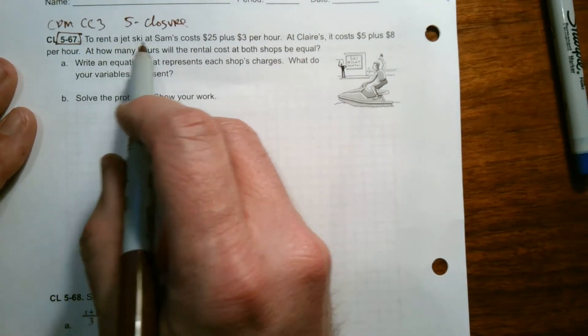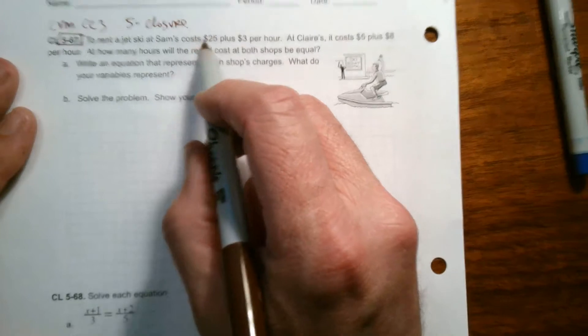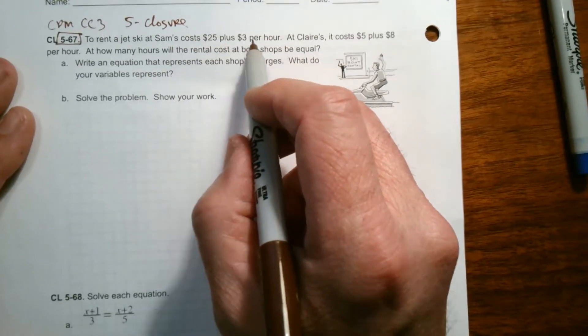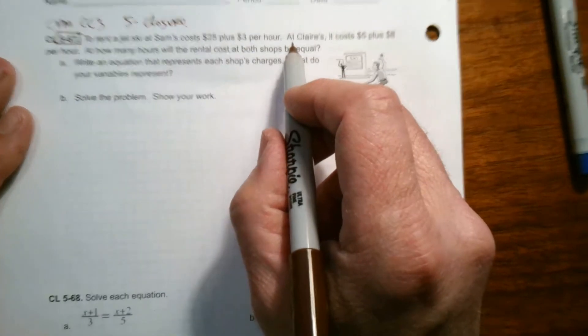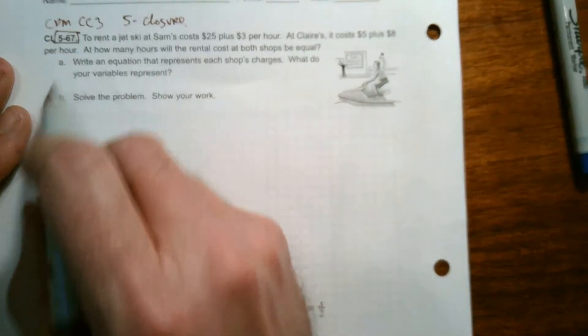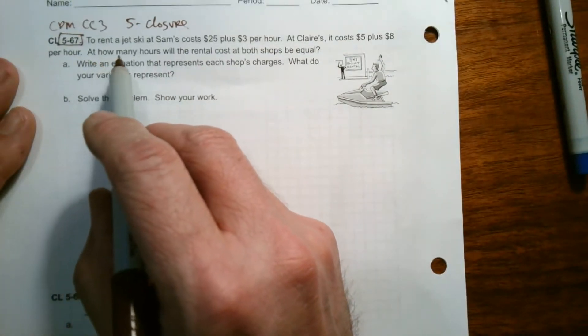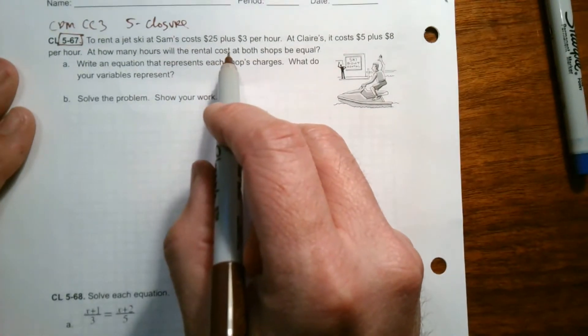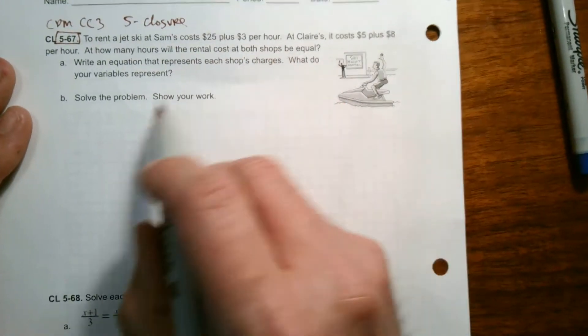So it says to rent a jet ski at Sam's costs $25 plus $3 per hour. At Claire's, it costs $5 plus $8 per hour. Wants to know at how many hours will the rental costs at both shops be equal?